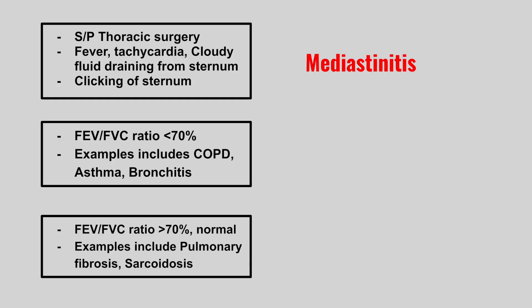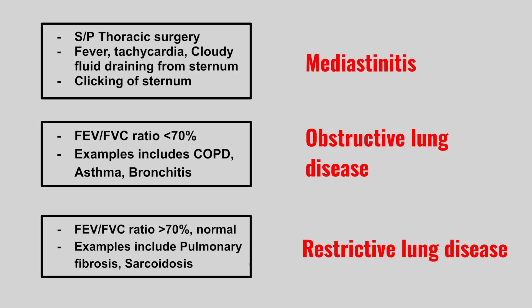We have a patient whose FEV1/FVC ratio is less than 70%, and examples include COPD, asthma, and bronchitis. This is obstructive lung disease. Now we have a patient whose FEV1/FVC ratio is over 70%, or normal, and examples include pulmonary fibrosis and sarcoidosis. This is restrictive lung disease.